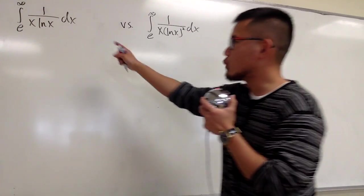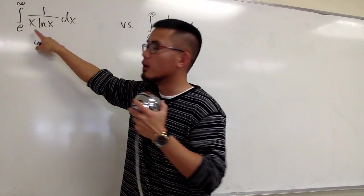We have two improper integrals on the board. The first one, the integral from e to infinity, 1 over x times ln(x) dx.